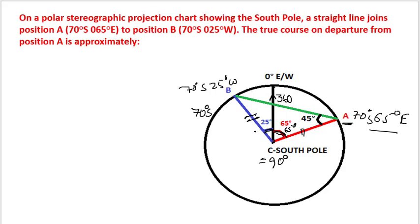This being an isosceles triangle, this angle and this angle would be equal. So how do we get 45 degrees? 180 minus 90 divided by 2 equals 90 divided by 2, which equals 45 degrees.